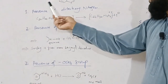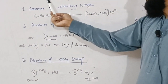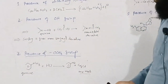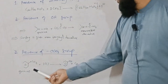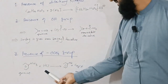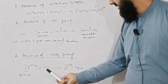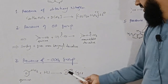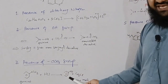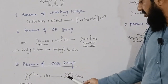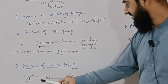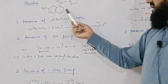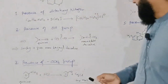A methoxy group is present. To check this, we treat quinine with HCl. Methyl chloride is removed and a hydroxy derivative is obtained. This shows that a methoxy group is present in the structure.